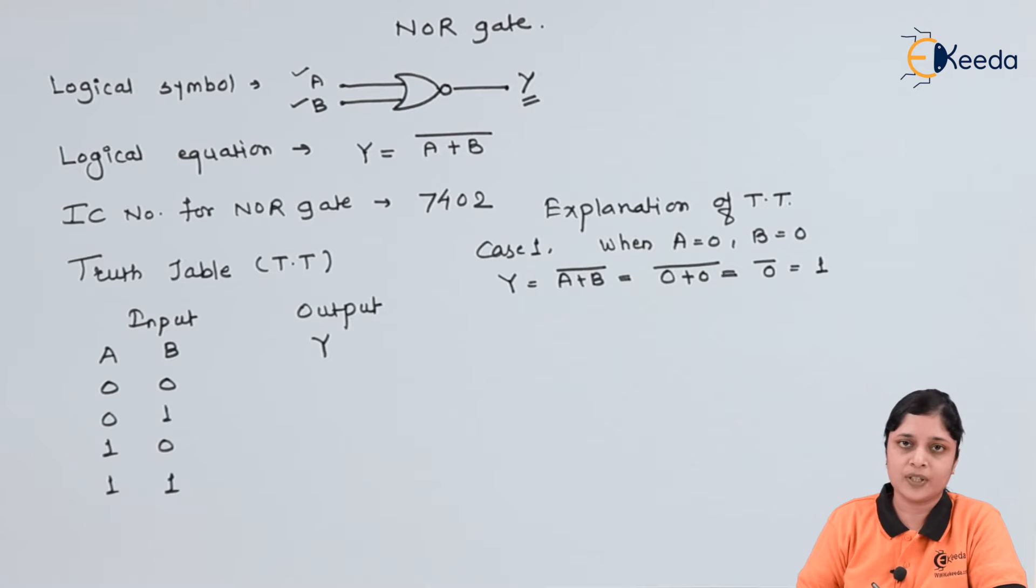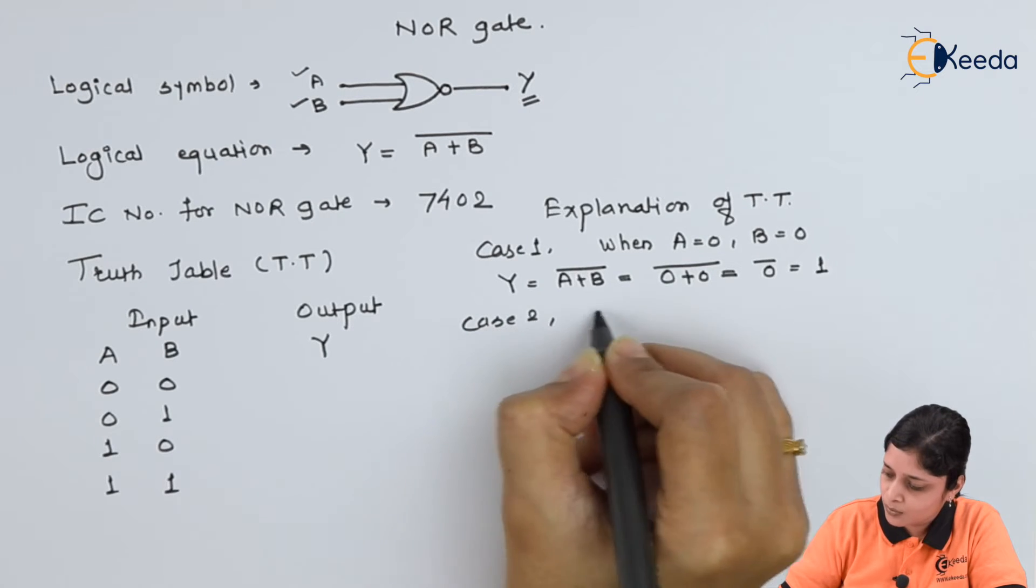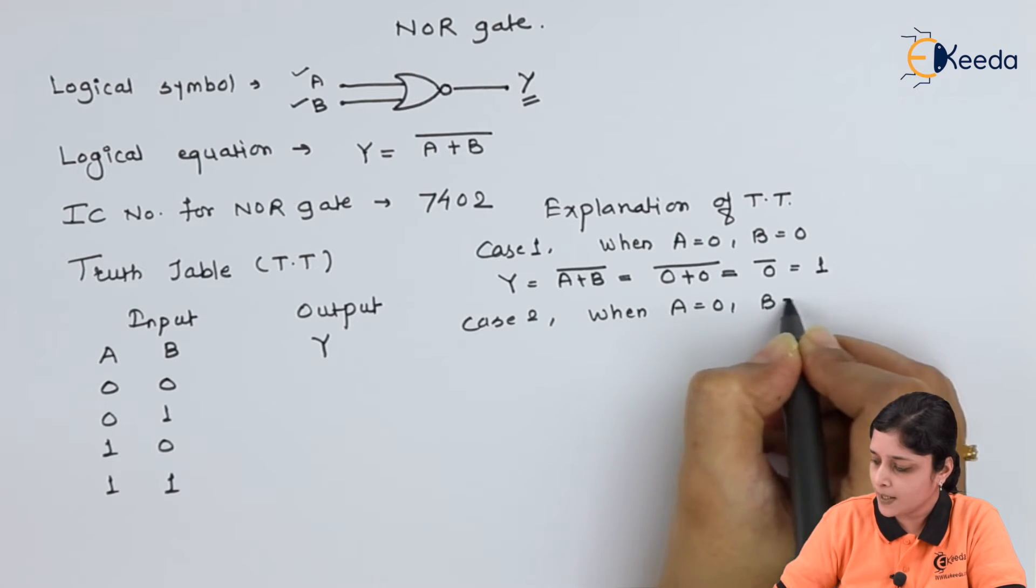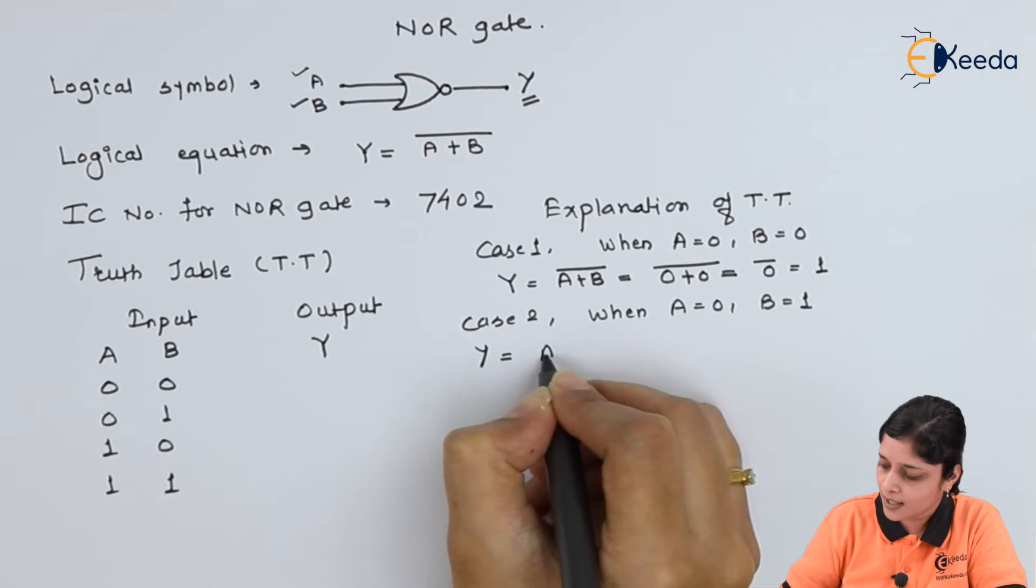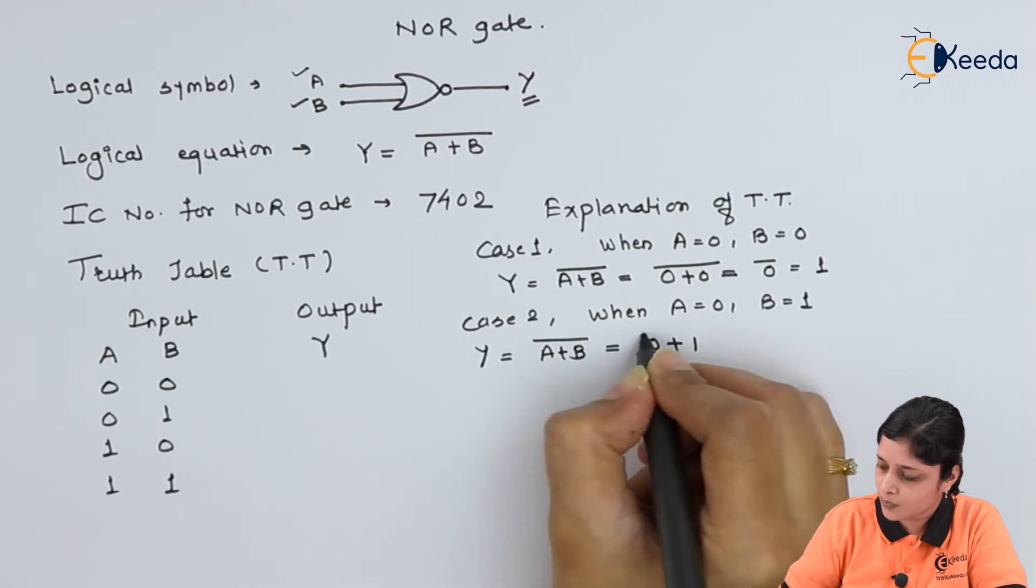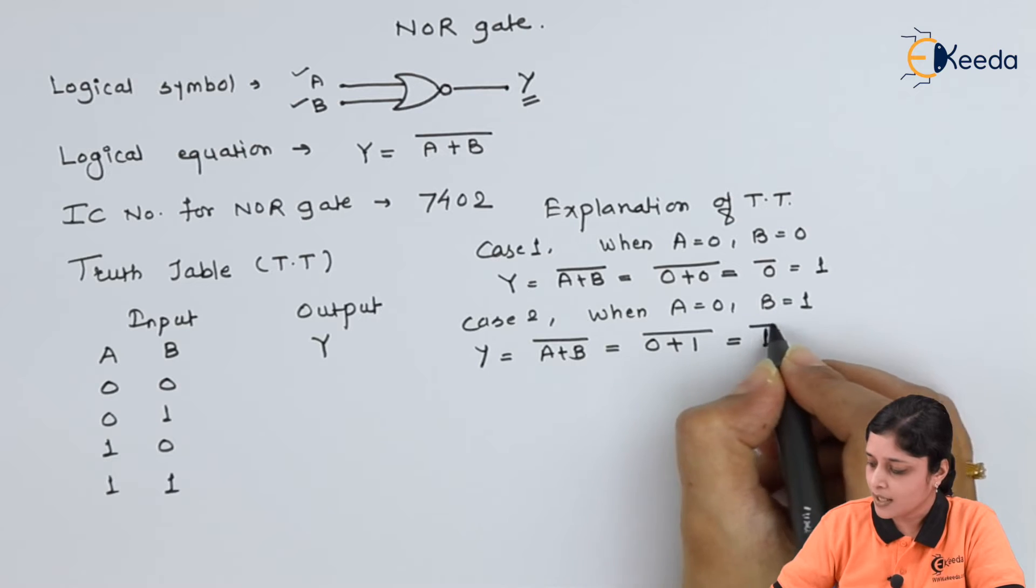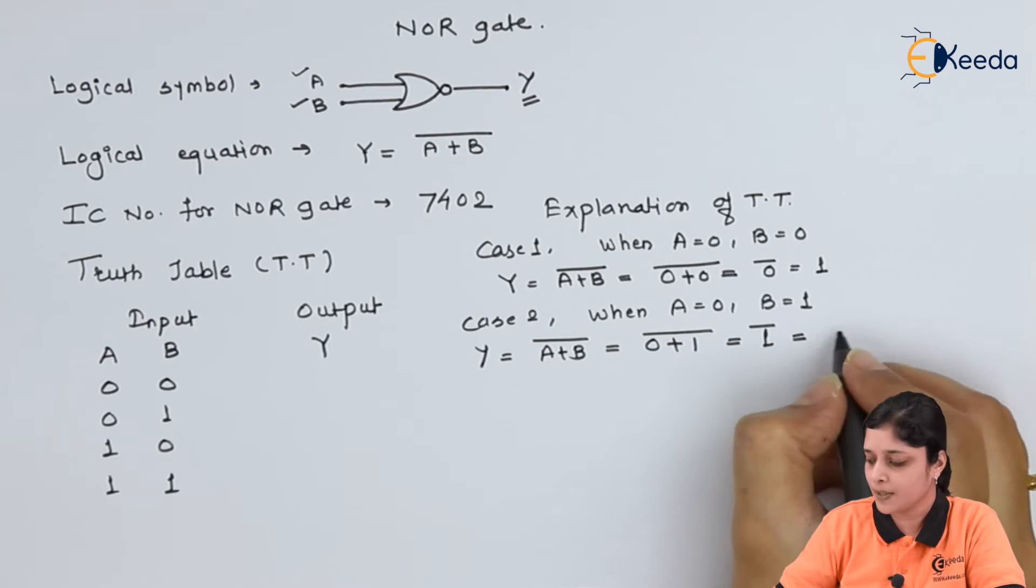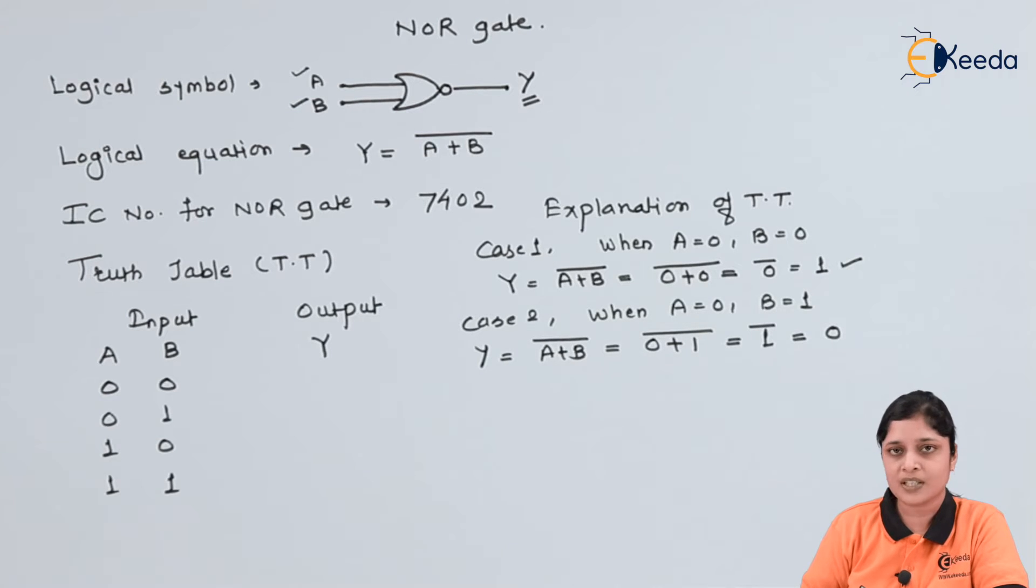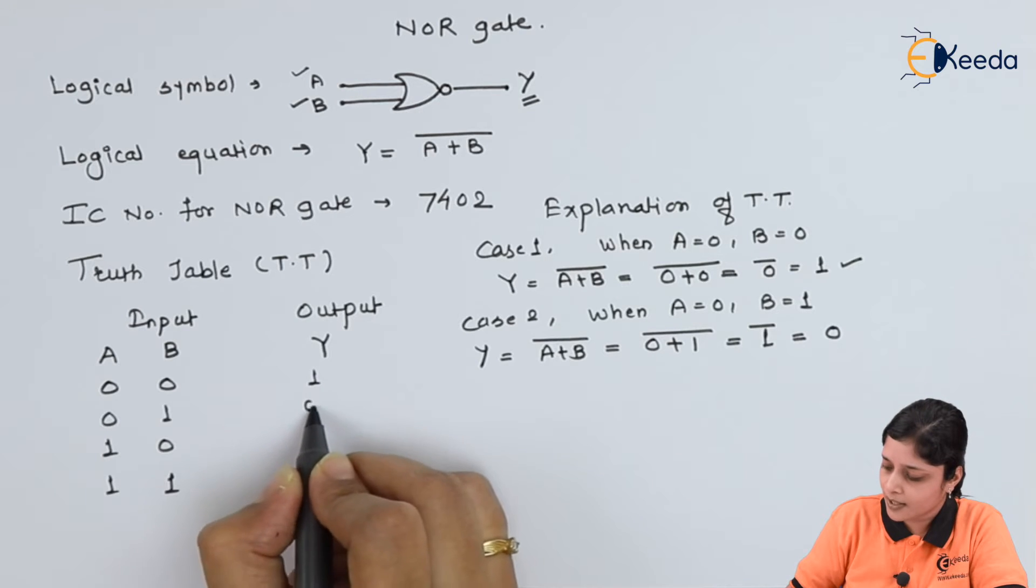In this way you have to calculate your answer. Then case 2, when A is 0, B is 1, Y equals to A plus B bar, that is 0 plus 1 bar. Now first of all you should know 0 plus 1 is 1, and 1 bar means 1 complement is always 0. So this is the output of first case we will write here. This is the output of second case we will write here.